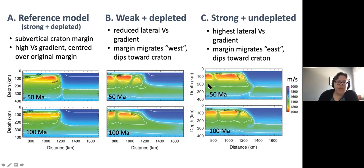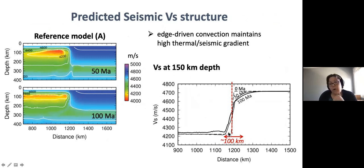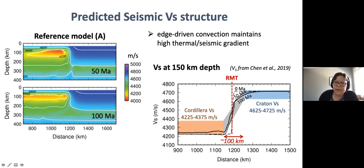Based on these, we can compare back to the observations - this is the one that looks more like what the seismologists see in their tomography models. More quantitatively, this is our reference model with shear wave velocities plotted as a function of distance at 150 kilometers depth. Over the 100 million year model run we maintain a very high velocity gradient over a horizontal distance of about 100 kilometers. You can also see this change in the craton velocities - that's the conductive heating I was mentioning. Comparing to the shear wave velocities from Yunfeng Chen's model, we actually have a fairly good match between the Cordilleran and craton velocities in terms of absolute values, and we're seeing the gradient over the same lateral distance that Yunfeng sees in his tomography.